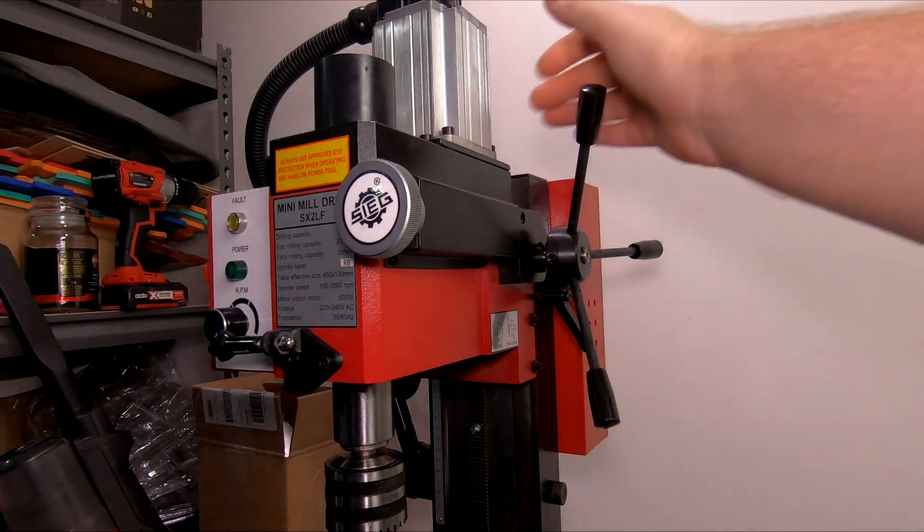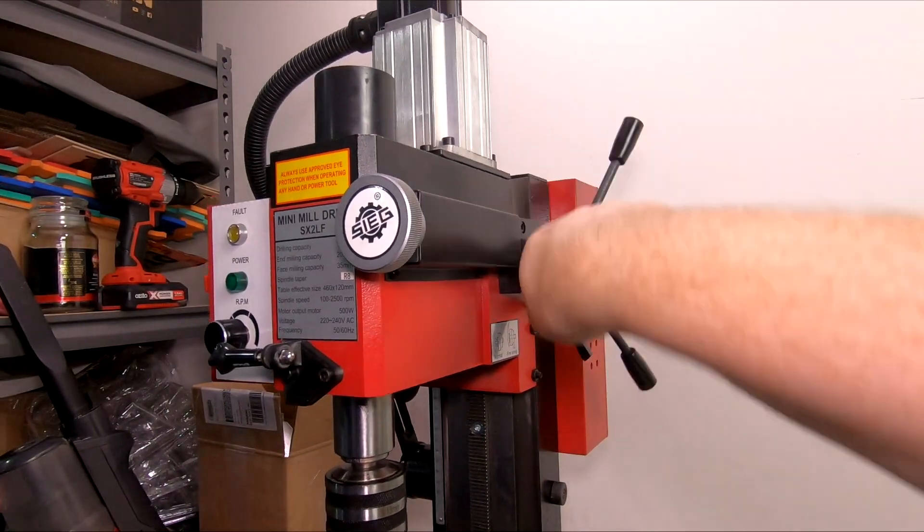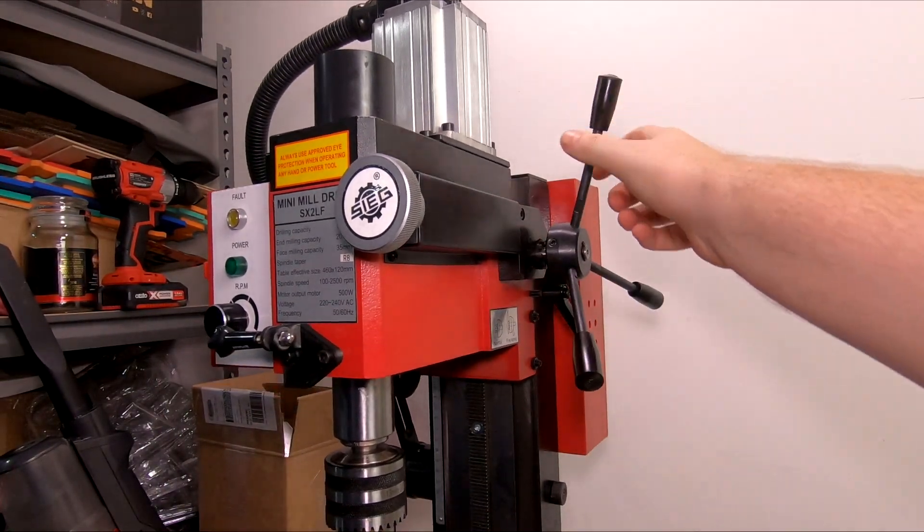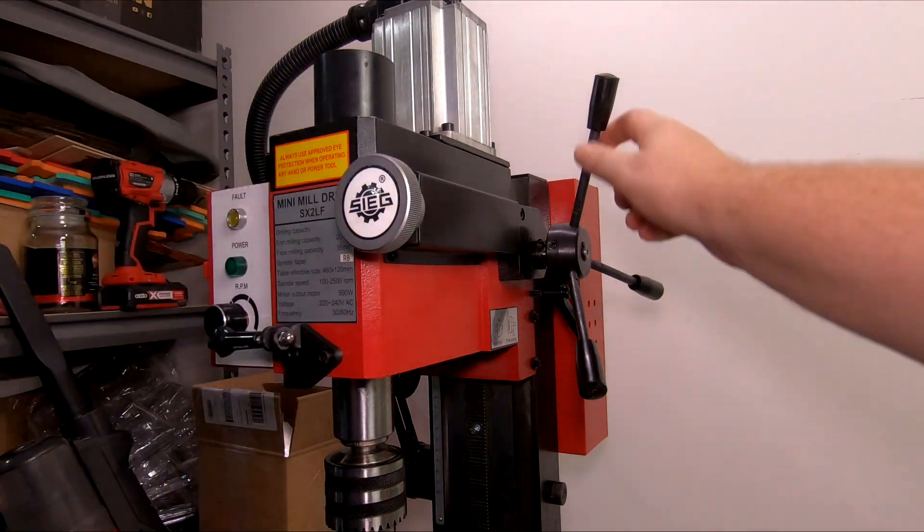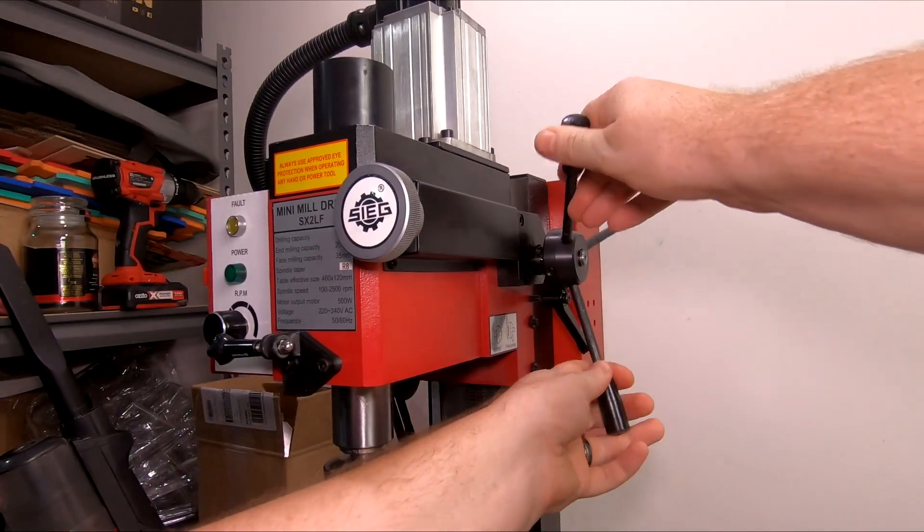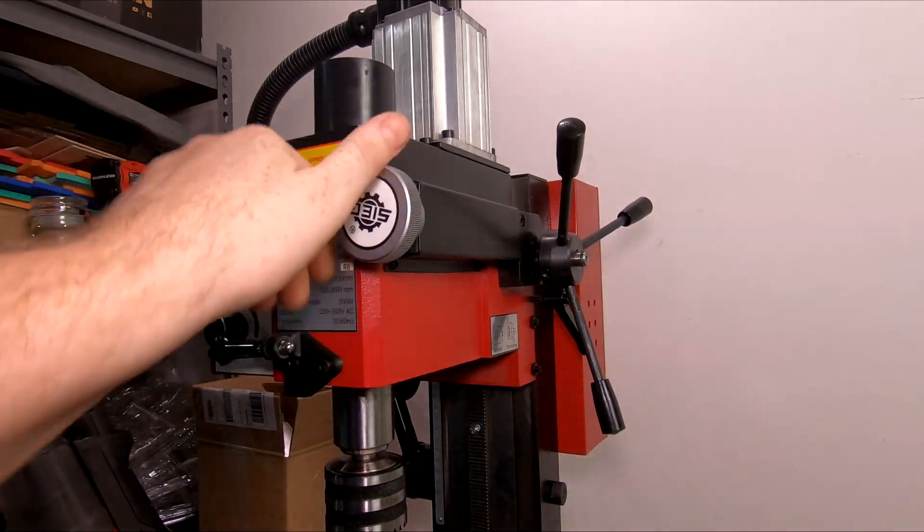From this side, you've got your big handle, which gives you your big Z adjustments. Obviously you only use that once you set the height that you need. And then this, once you've locked this into place, is your fine adjustment.